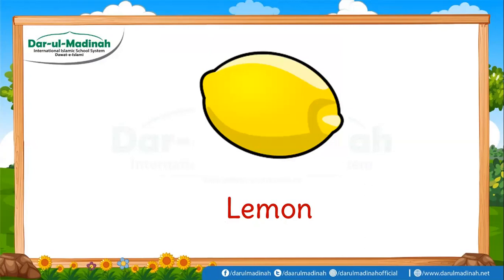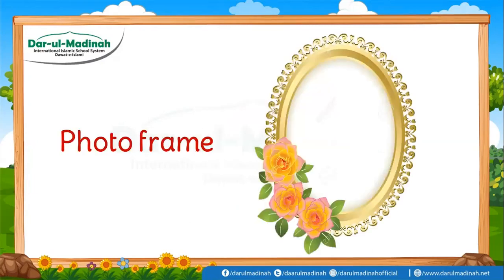Do you know what is this? Wow, this is a lemon. Kids, this is a lemon, its shape is also an ellipse. Wow, here is a photo frame. It is also like ellipse. बच्चों, ये एक फोटो फ्रेम है. इसकी शकल भी ellipse है.